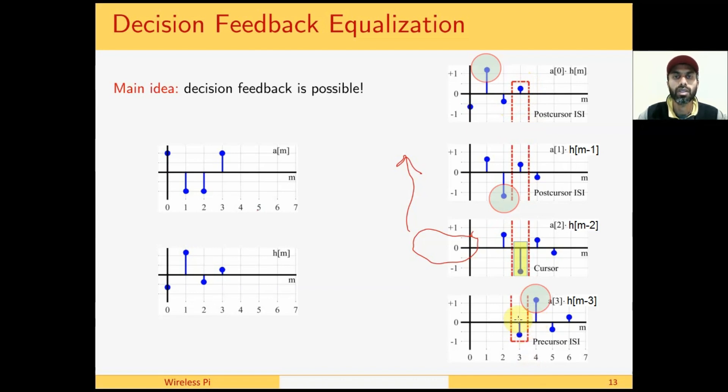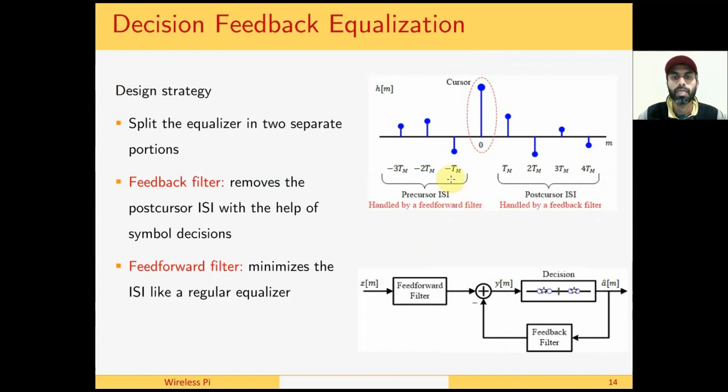Here we draw this concept in the form of a longer channel response. We see that the postcursor ISI can be removed because decisions on these symbols have already been taken. The precursor ISI comes from future symbols. If the direction of pre and postcursor ISI seems confused, you can look at this figure to understand this concept.